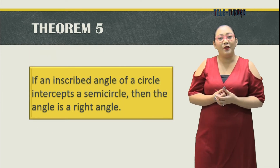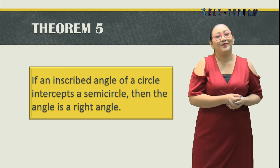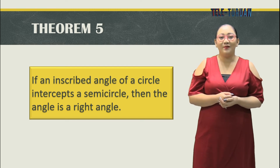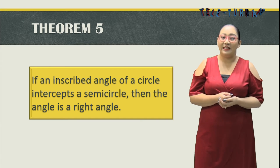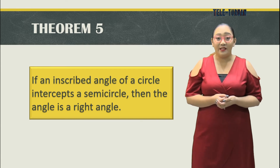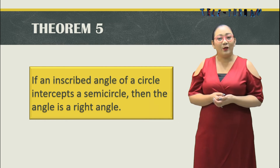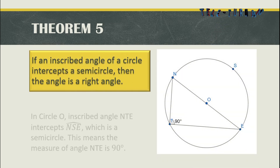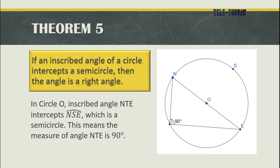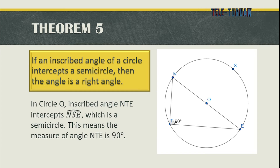Theorem number five: If an inscribed angle of a circle intercepts a semicircle, then the angle is a right angle. In circle O, inscribed angle NTE intercepts arc NSE, which is a semicircle. This means that the measure of angle NTE is 90 degrees.